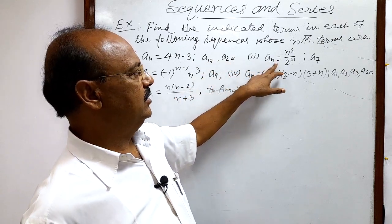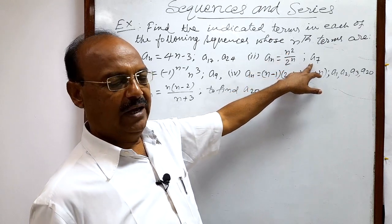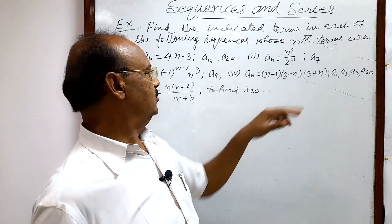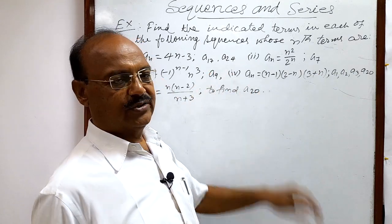Second question is an is equal to n square upon 2 to the power n, a7. We have to find out 7th term here. So in this way, we are having 5 questions and we will do these questions one by one.